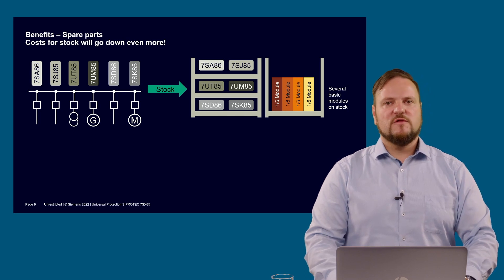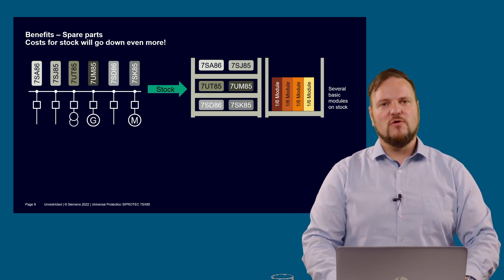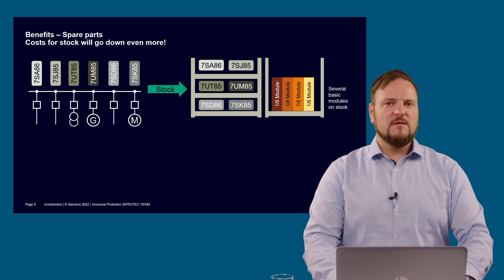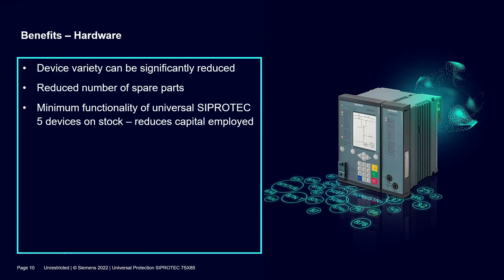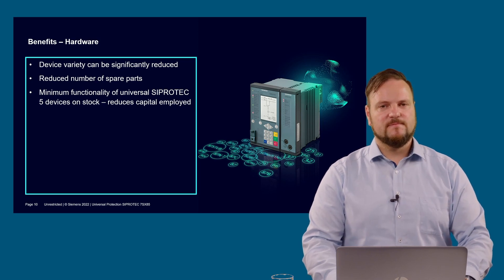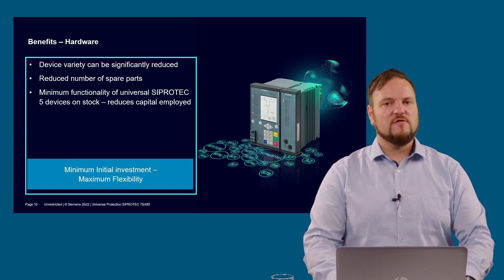With SIPROTEC 5, spare part management is optimized — it is no longer required to keep complete devices in stock. Typical basic and IO modules can be stored separately and assembled when required. The benefit is even greater when the variety of basic modules is minimized, which is exactly what the universal device enables. Device variety is significantly reduced, decreasing the number of spare parts needed. Devices on stock have minimum functionality, reducing capital employed. Additional functions can be ordered on demand and paid for when downloaded. Initial investment is kept as low as possible while maintaining full flexibility.